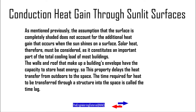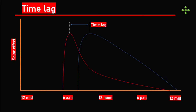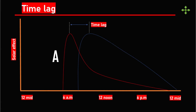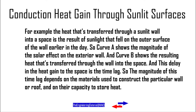The time required for heat to be transferred through a structure into the space is called the time lag. For example, the heat transferred through a sunlit wall enters a space as the result of sunlight that fell on the outer surface of the wall earlier in the day. Curve A shows the magnitude of the solar effect on the exterior wall, and curve B shows the resulting heat transferred through the wall into the space. This delay in heat gain to the space is the time lag, and its magnitude depends on the materials used to construct the wall or roof and their capacity to store heat.